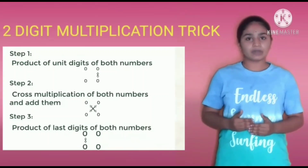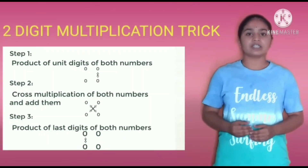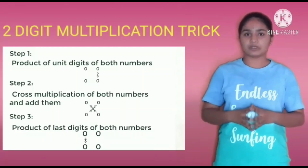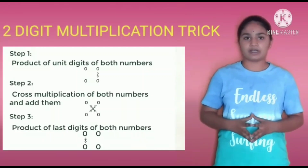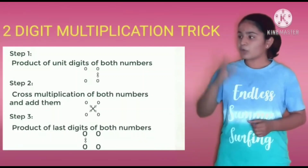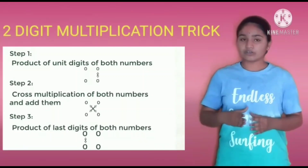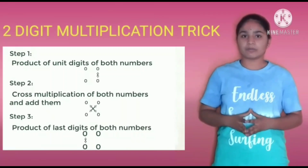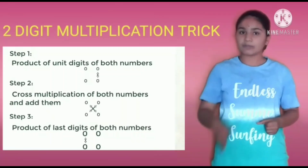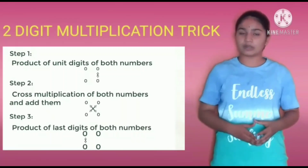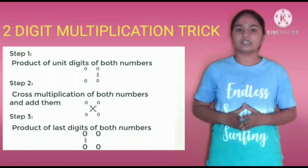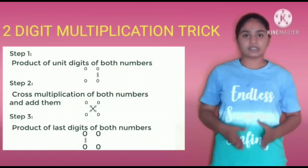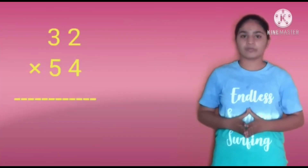In the 2-digit multiplication trick, there are 3 steps. Step 1: Product of the unit digits of both numbers. Step 2: Cross multiplication of both numbers and add them. Step 3: Product of the last digit.